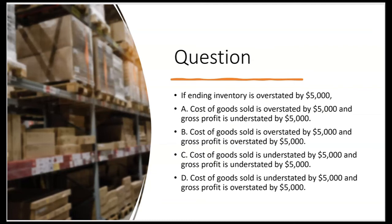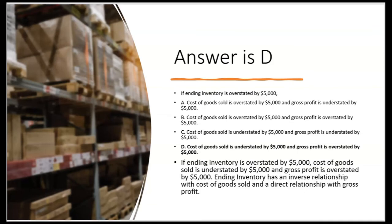Now a more sophisticated question like you'll see on the exam. If ending inventory is overstated by $5,000, could cost of goods sold be overstated? No — so A and B are out. Answer C says cost of goods sold is understated by 5,000 — yes, because of the inverse relationship between ending inventory and COGS. But it also says gross profit is understated by 5,000. Wait — ending inventory has a direct relationship with gross profit, so if ending inventory is overstated by 5,000, gross profit must also be overstated by 5,000. So C is out. The answer is D.